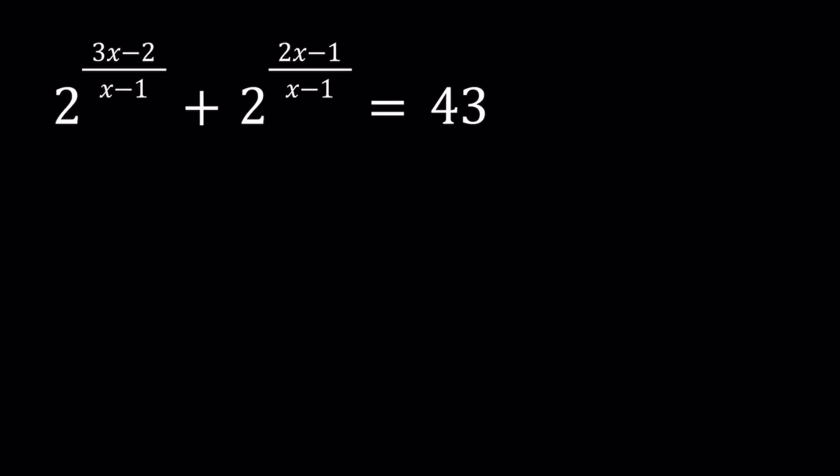Hello everyone. In this video we're going to be solving an exponential equation from Romania. We have 2 to the power of (3x minus 2) over (x minus 1), plus 2 to the power of (2x minus 1) over (x minus 1), equals 43. And we're going to be looking for x values.